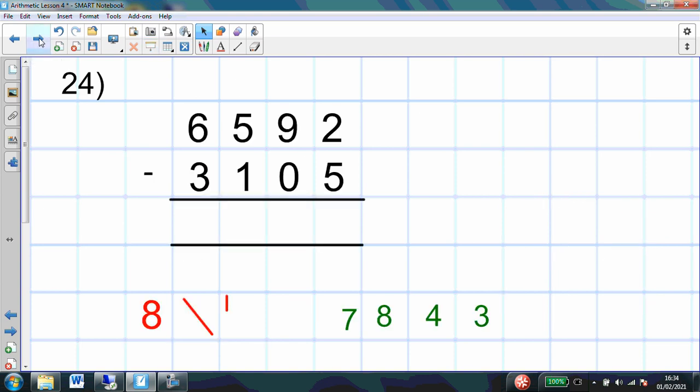Question 24 is a subtraction. And we're going to have to do some exchanging here. What column do I start with when I am subtracting? Yes, I always start with my 1's, don't I? 2 take away 5. Oh no. Already I can't do it. I cannot do 2 take away 5. So what am I going to do?